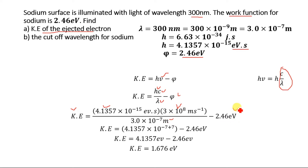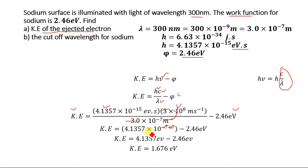By substituting the values for Planck's constant, speed of light, and wavelength and solving, we finally get the kinetic energy as 1.676 electron volt. In the calculation, we cancel the 10 to the power minus 15 multiplied by 10 to the power 8, which gives 10 to the power minus 7. Shifting minus 7 to the exponent gives 10 to the power 0, which equals 1. So we have 4.1357 electron volt minus 2.46 electron volt, giving kinetic energy of 1.676 electron volt.